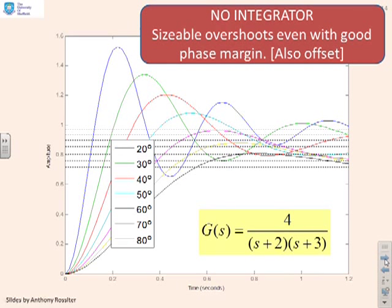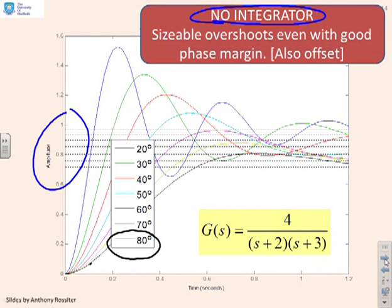With this one, we've said I'm no longer going to have an integrator. Do I get the same insights if I remove the integrator? Here you see you don't. Apart from the offset because there's no integrator, let's ignore the offset and just look at the behavior. You'll see even with an 80-degree phase margin, which is this black line, you've got a sizeable overshoot.